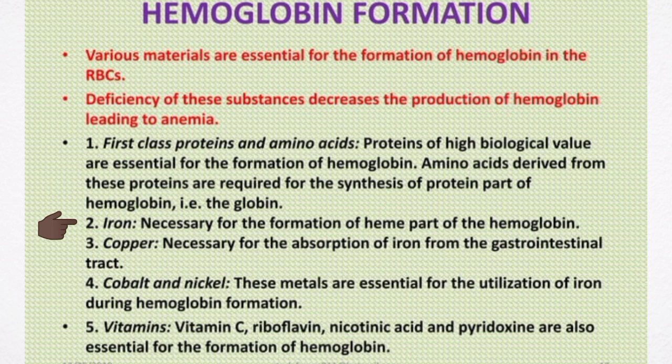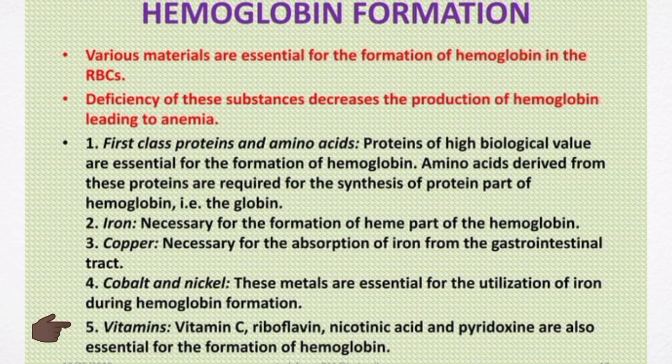Iron is necessary for the formation of the heme part of hemoglobin. Copper is necessary for the absorption of iron from the gastrointestinal tract. Cobalt and nickel are metals essential for the utilization of iron during hemoglobin formation. Finally, vitamins C and nicotinic acid are also essential for the production of hemoglobin. Thank you for listening.